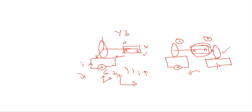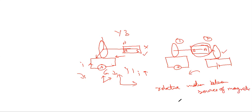From these observations, we can conclude that if there is relative motion between the source of the magnetic field — whether a magnet or a current-carrying coil — and a coil, then some current is induced in the coil. This phenomenon is nothing but electromagnetic induction.